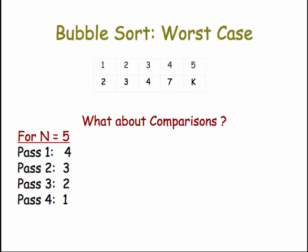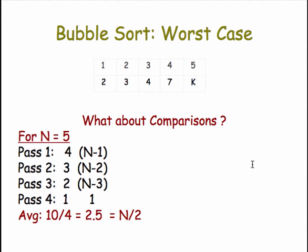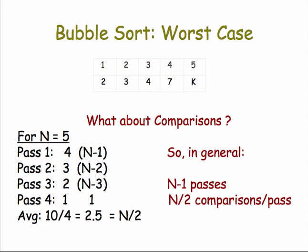And what about comparisons then? For n equals five, we saw that on the first pass we needed four comparisons, that's n minus one. On the second pass, we needed three, which is n minus two. And then we needed two, which is n minus three. And when we got down to the last pass, we needed one comparison. That'll always be the case because you'll only be left with two cards at that point. So we did a total of ten comparisons over the four passes, which is an average of 2.5, which happens to be n over two.